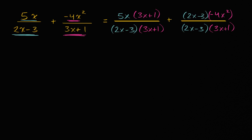And so then I can rewrite all of this as being equal to, well in the numerator, I'm gonna have 5x times 3x, which is 15x squared. 5x times one, which is plus 5x.